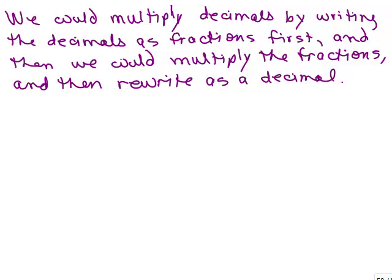We could multiply decimals by writing the decimals as fractions first and then we could multiply the fractions and then write our answer in decimal form. So here's an example. What if I had 0.3 times 0.4? Well, what does this mean? What does 0.3 really mean?